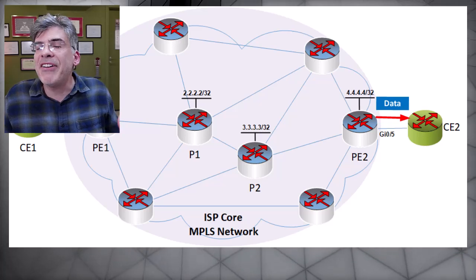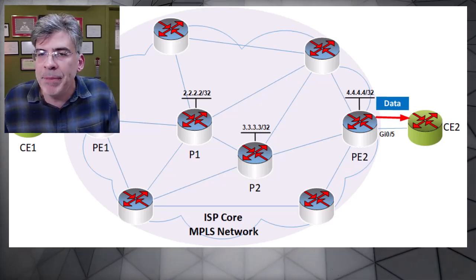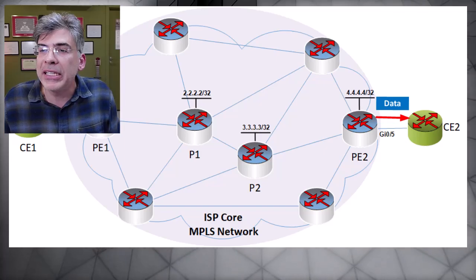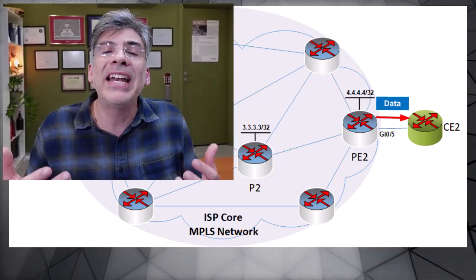That gives you an idea of how layer 2 VPNs are configured using AToM and how they operate over an MPLS network. I hope you found this video useful — if so, please click the thumbs up button. If you have any questions or feedback, feel free to let me know in a comment below. Please subscribe to get updates on newly published videos.